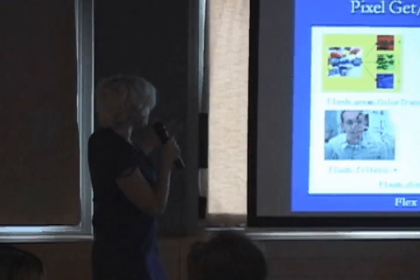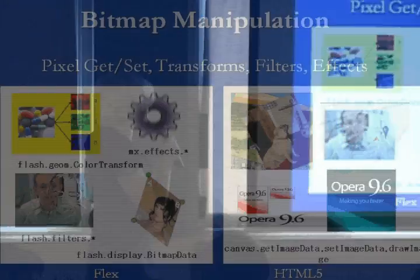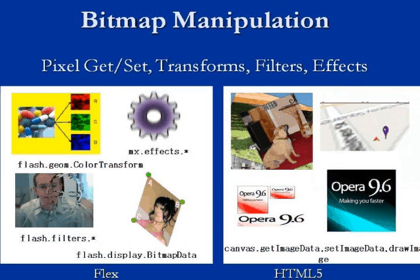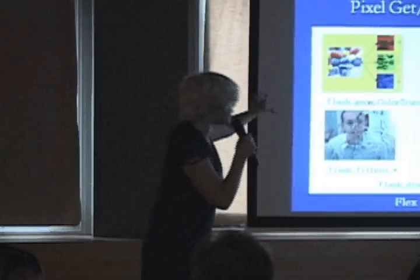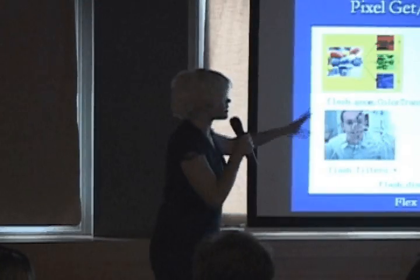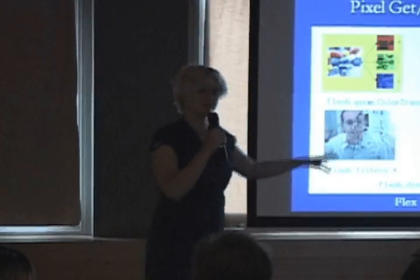Once you have graphics, you want to manipulate them. With Flex, you can apply all kinds of effects — change the bitmap data, do transforms, etc. With HTML5, all you can do is change the pixel data, but basically you can accomplish all of that — it's just a little bit harder.